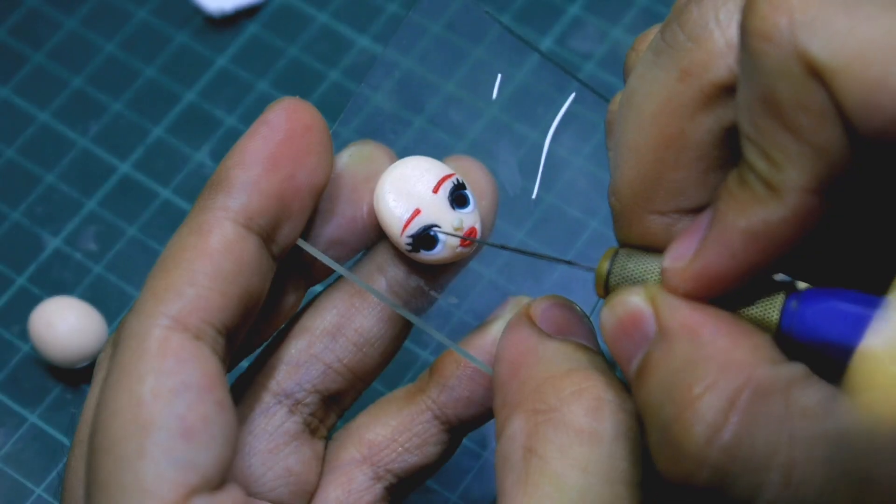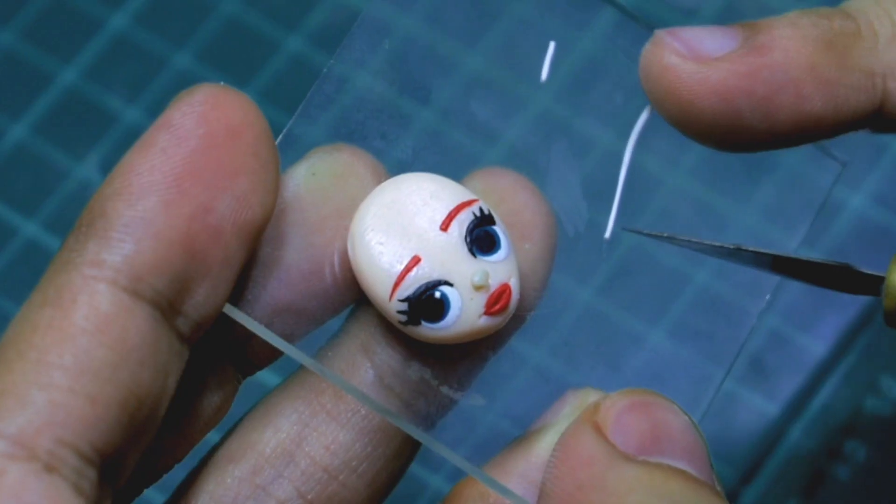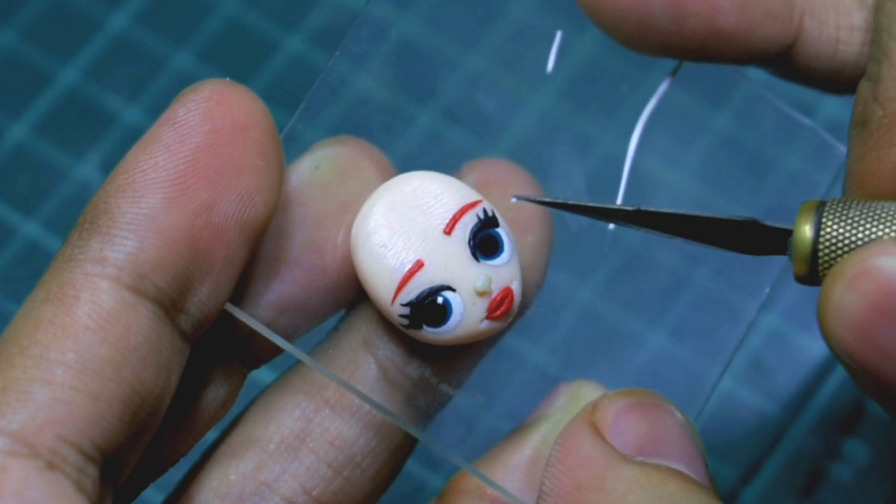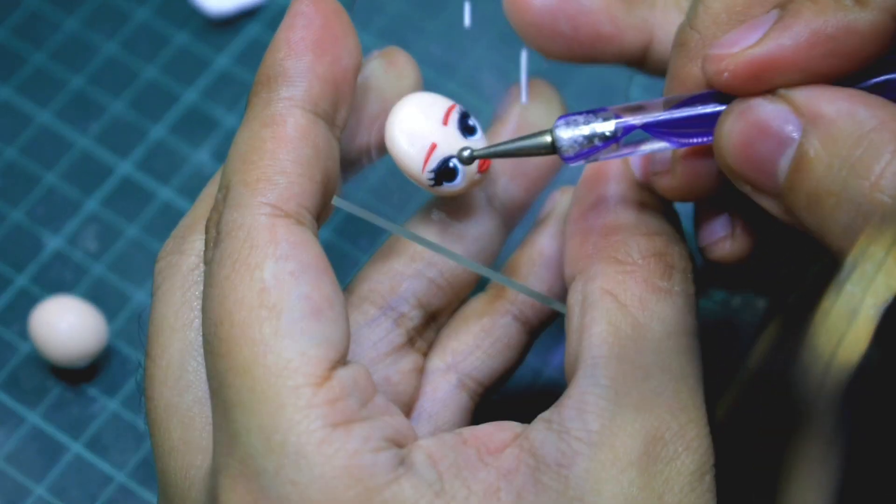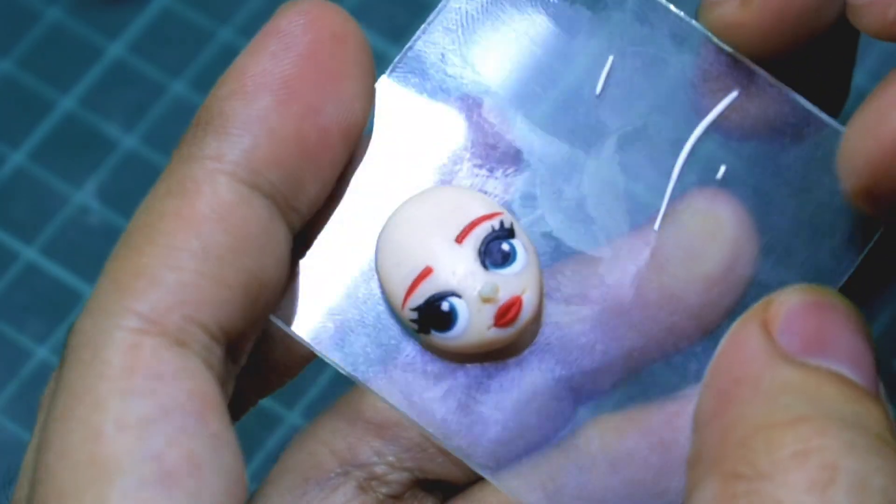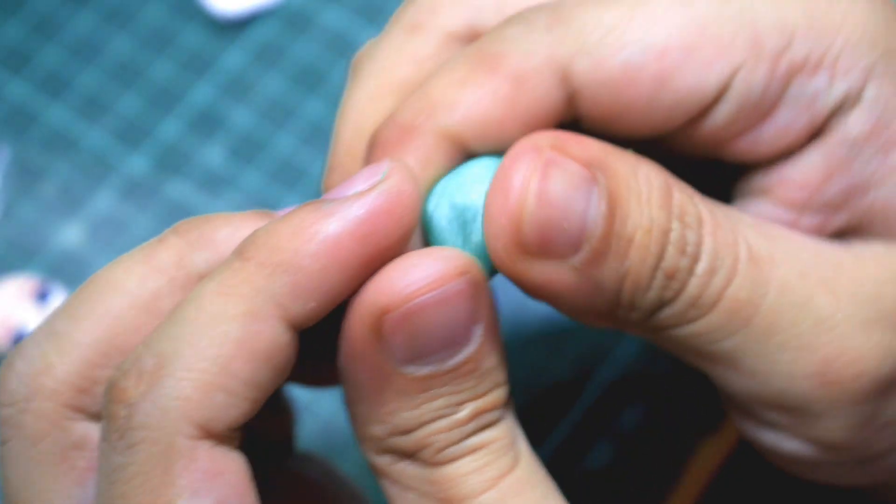Of course, to make the eyes alive let's put the glare effect. And now we're done with the face. Next, let's make the body, but first let's make her tail.